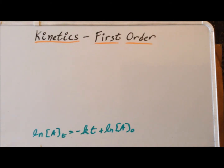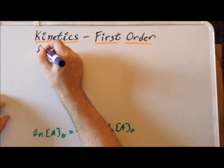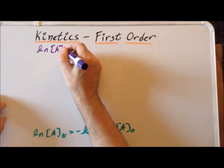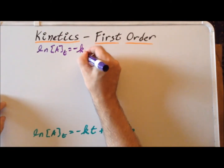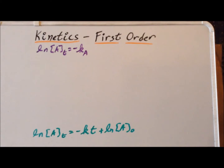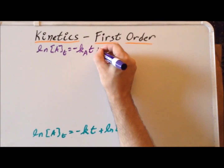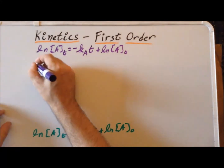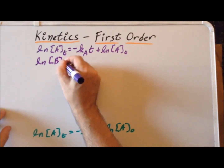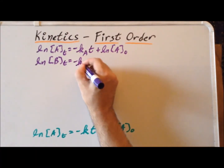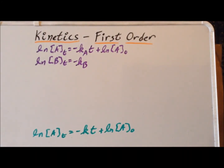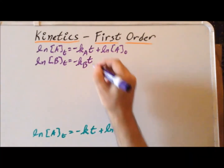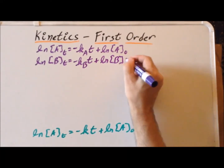Since this expression is true for any substance undergoing a first-order reaction, it applies specifically to A and B. For substance A: ln[A]_t = −k_A·t + ln[A]₀. It is also true for substance B: ln[B]_t = −k_B·t + ln[B]₀, where k_B is the first-order rate constant for the decomposition of B.